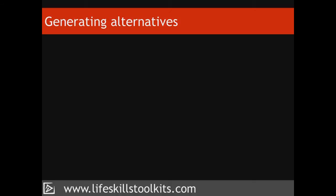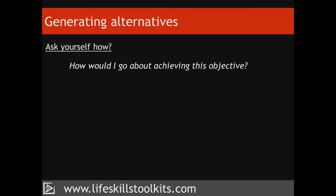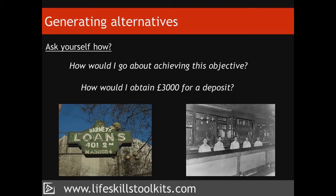Here are six ways to identify the best possible alternatives. First, ask yourself how. For each of your decision objectives, ask yourself how you would go about achieving it. If one of your objectives is to gather £3,000 for a deposit to rent an apartment, ask how you would obtain £3,000. Depending on your circumstances, your alternatives might range from getting a loan to taking an evening job to earn extra money.